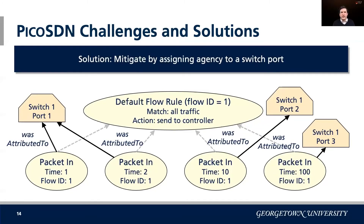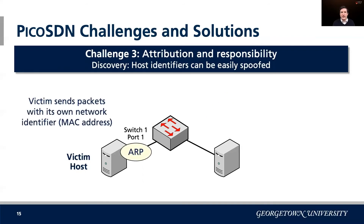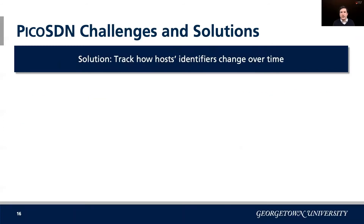You might wonder why switch ports rather than hosts, since some ports such as network edge ports have hosts behind them. That led us to another consideration: host identifiers can be easily spoofed. ARP spoofing, for example, is well known in traditional networks. In the SDN case, this is similar, except that SDN maintains objects with that information, so the impact of spoofing attacks is different because of how those objects are used to make control plane decisions.